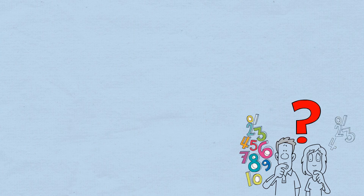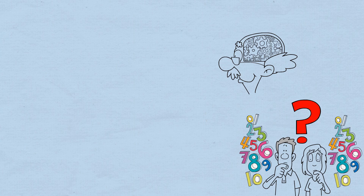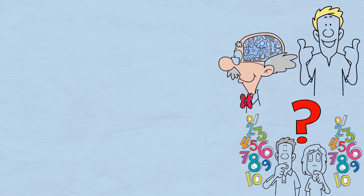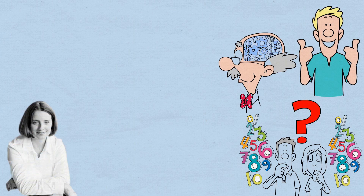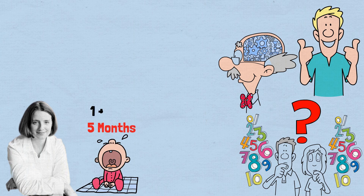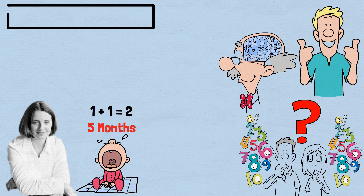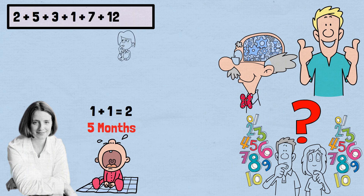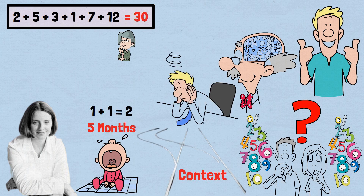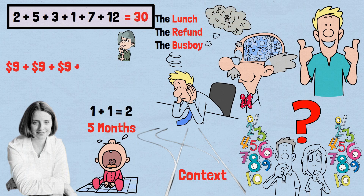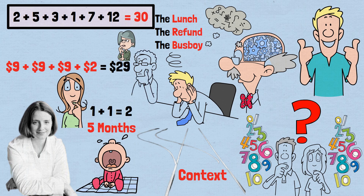Part of what makes the missing dollar riddle so confusing is that it bombards you with numbers in a specific context. This reveals something fascinating about how our brains process mathematical information. Yale cognitive scientist Karen Wynn found that infants as young as 5 months can understand simple arithmetic like 1 plus 1 equals 2. But when context is added to numbers, it's easy to get sidetracked. We get so wrapped up in thinking about the lunch, the refund, and the busboy that we gloss over the real mathematics — we hear 9 plus 9 plus 9 plus 2 equals $29 and immediately wonder where the dollar went, without stopping to question whether this is the right calculation in the first place.